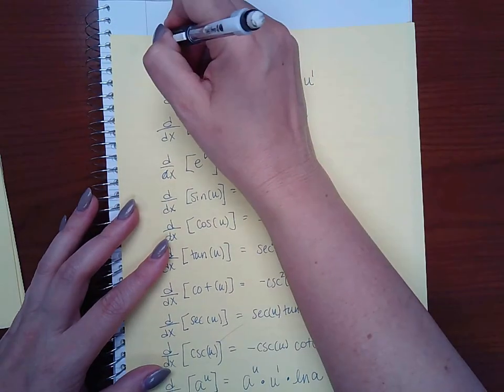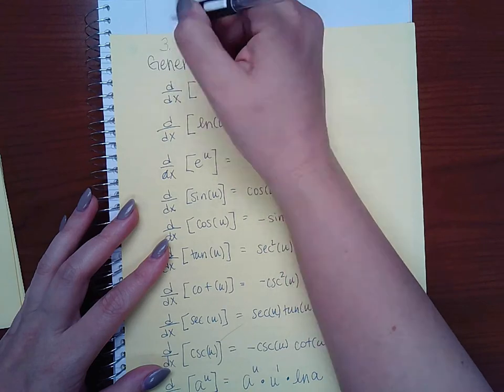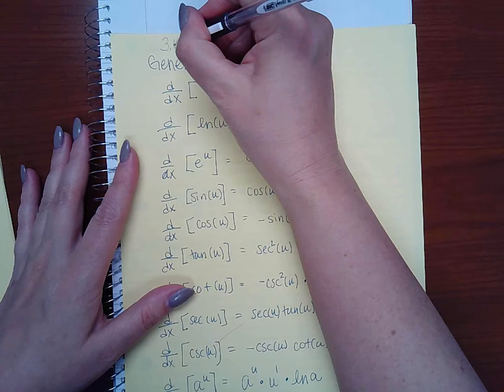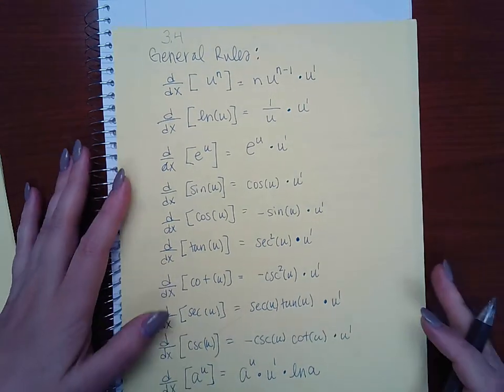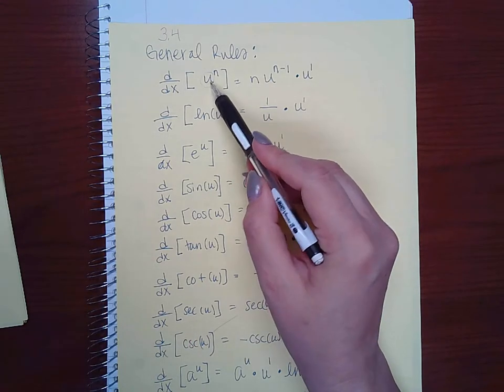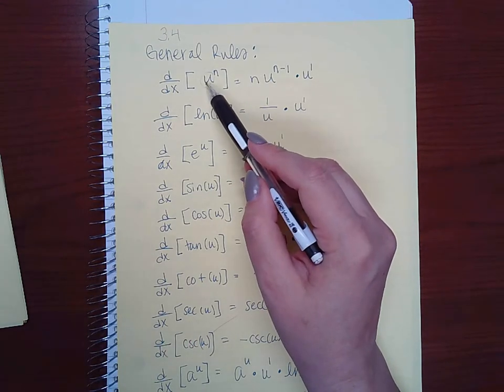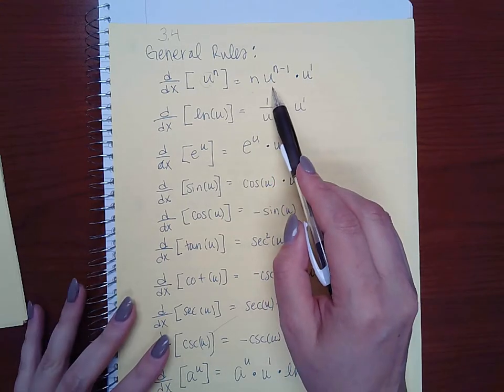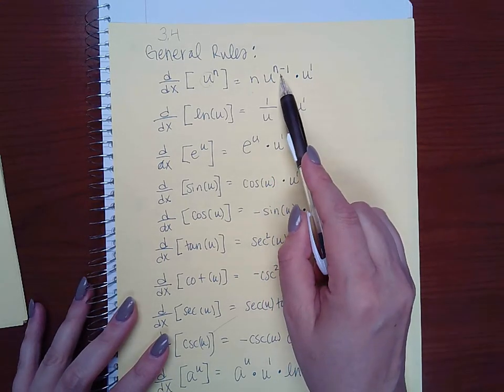Okay, this is still section 3.4, the chain rule, but I wanted to go over the general rules. If your base is not an x, it's anything else other than just x by itself, the way you do the power rule is you bring down the power, keep your base the same, decrease the exponent by one, and then multiply by the derivative of that base.